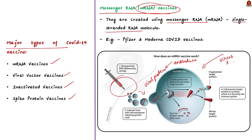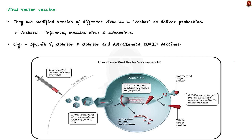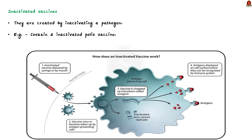Secondly, viral vector vaccines use different viruses as vectors, including influenza, measles virus, and adenovirus. Adenovirus is one of the viral vectors used in COVID-19 vaccines. COVID vaccines such as Sputnik, Johnson & Johnson, and AstraZeneca use viral vector vaccines. Thirdly, inactivated vaccines are created by inactivating a pathogen using heat or chemicals. This process destroys the pathogen's ability to replicate but keeps the virus or bacteria intact, so the immune system can still recognize it and develop antibodies. An example is Covaxin, which uses an inactivated virus.